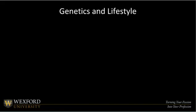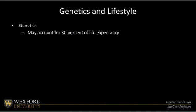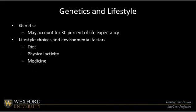Both science and research indicate that genetics may account for up to 30% of one's life expectancy. So a lot of how long we live is determined by what's passed down through our family lines — that's not really something we can control. However, lifestyle, especially when you look at these environmental factors, is more controllable for the individual.